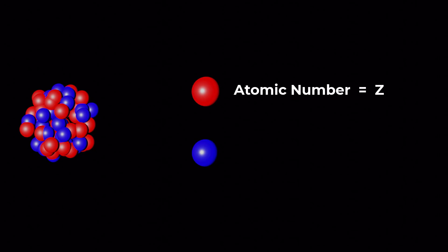The number of protons in an atom is known as the atomic number, represented by Z, and determines the element to which the atom belongs.